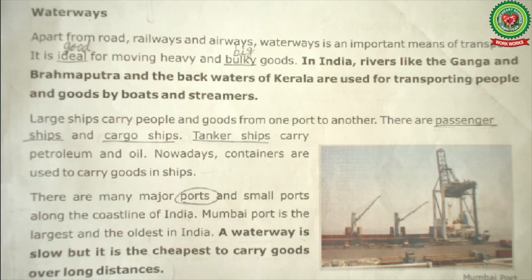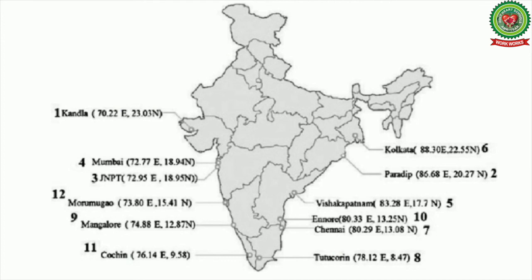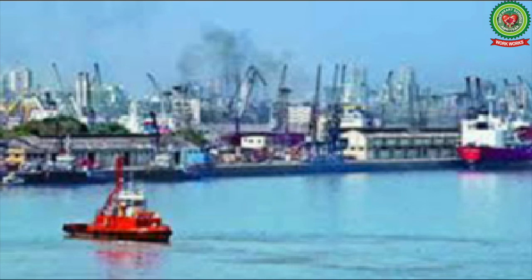There are many major ports and small ports along the coastline of India. Mumbai port is the largest and oldest in India — it was established in 1873. There are 13 major sea ports of India. Waterways are the slowest means of transport compared to others, but they are the cheapest means of transport to carry goods over long distances or to foreign countries.